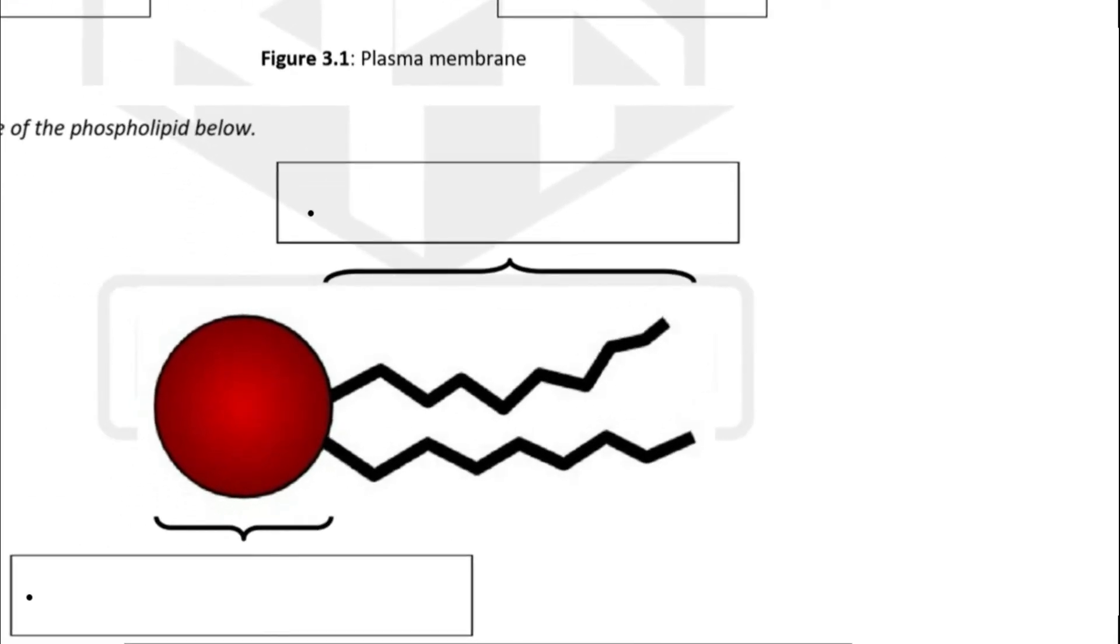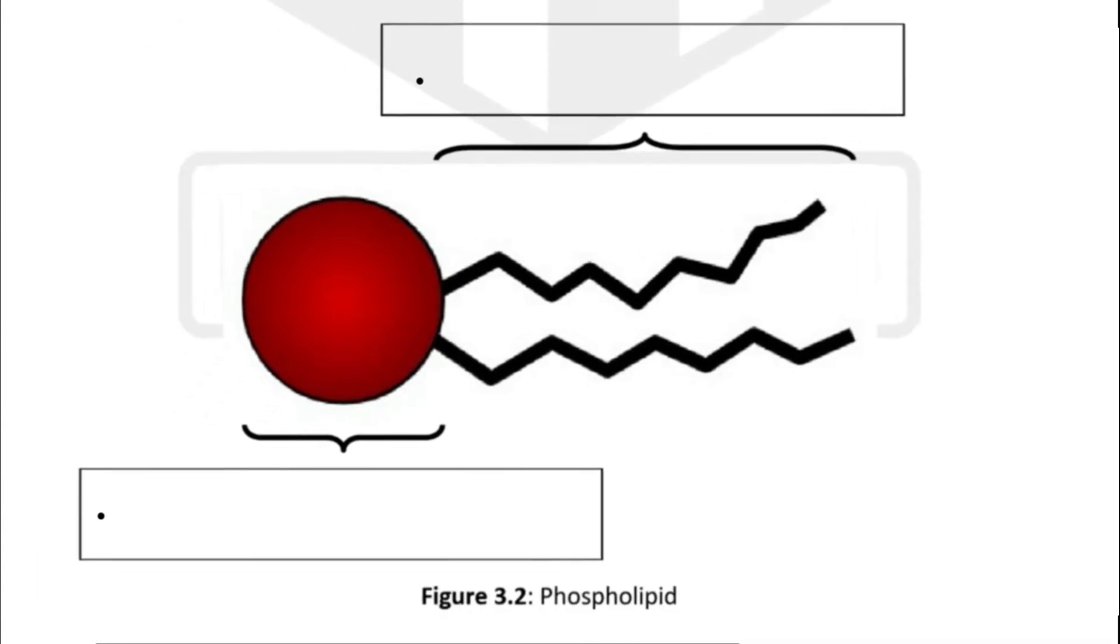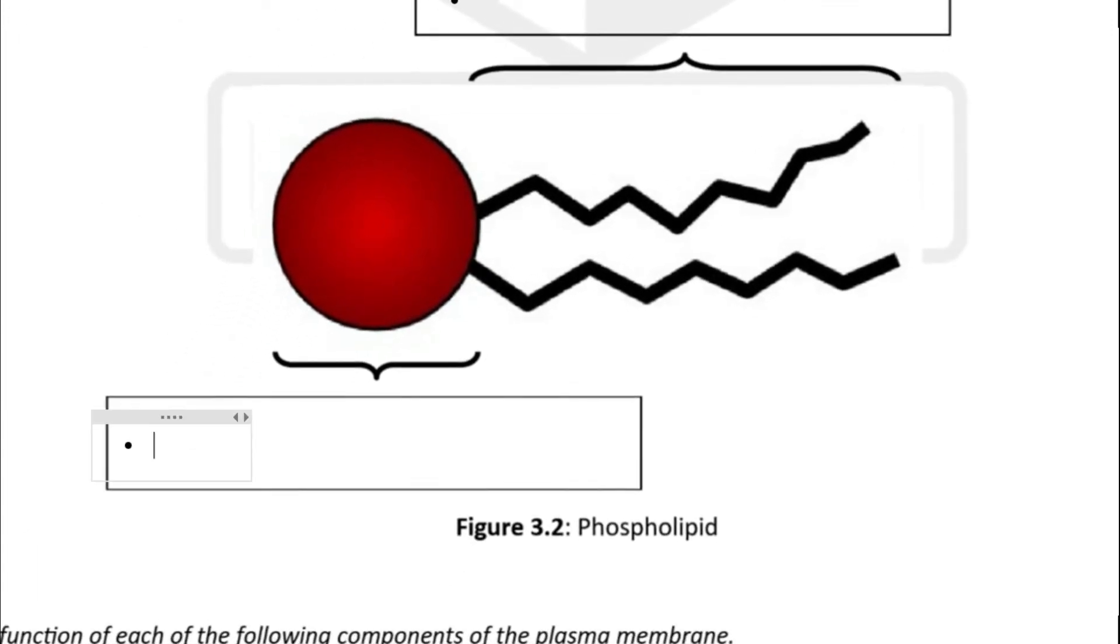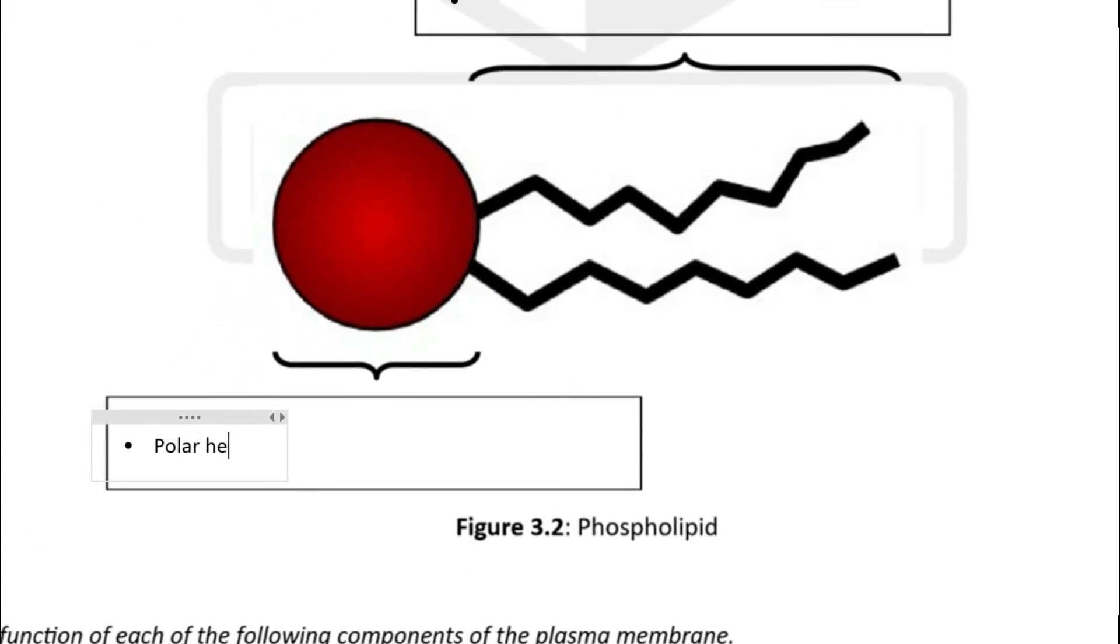Let's take a closer look at this phospholipid. The phospholipid is actually made of two components. It has a head. The head of the phospholipid is known as the polar head. The head is hydrophilic in nature, which means it attracts water.